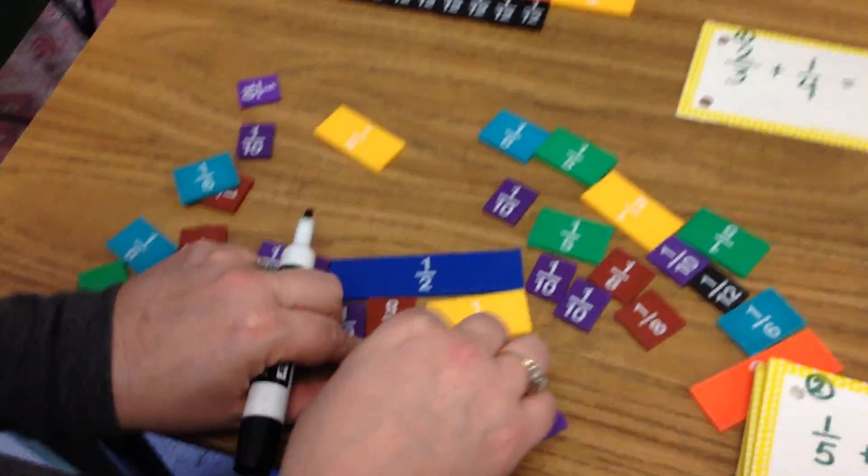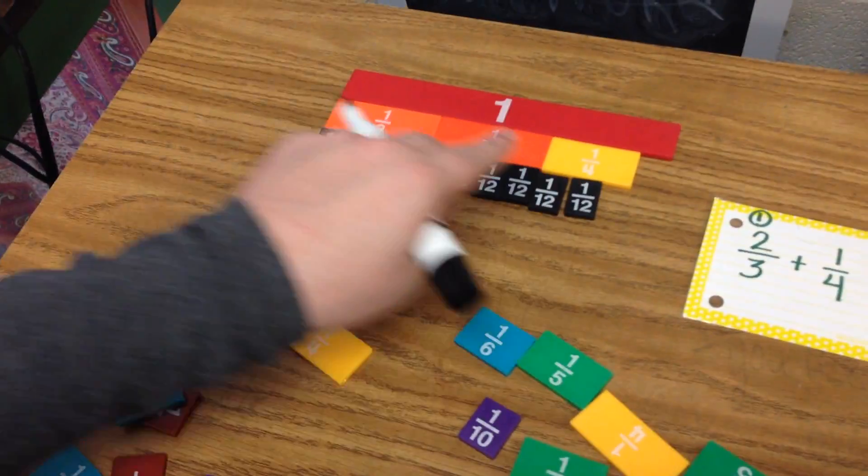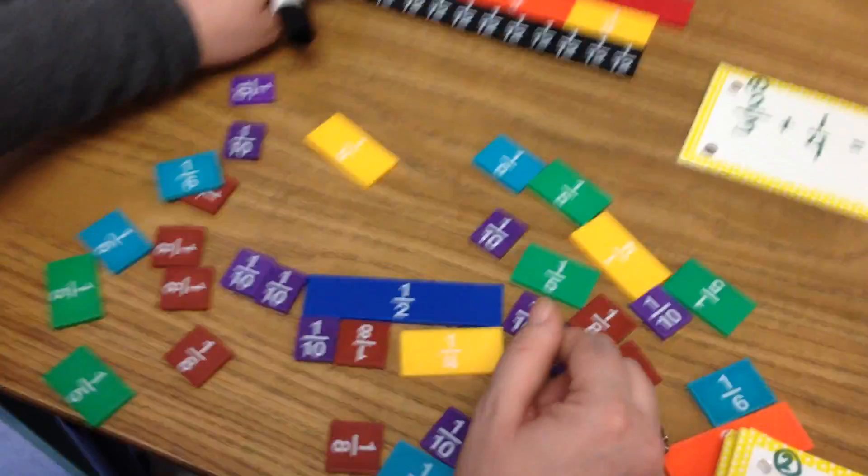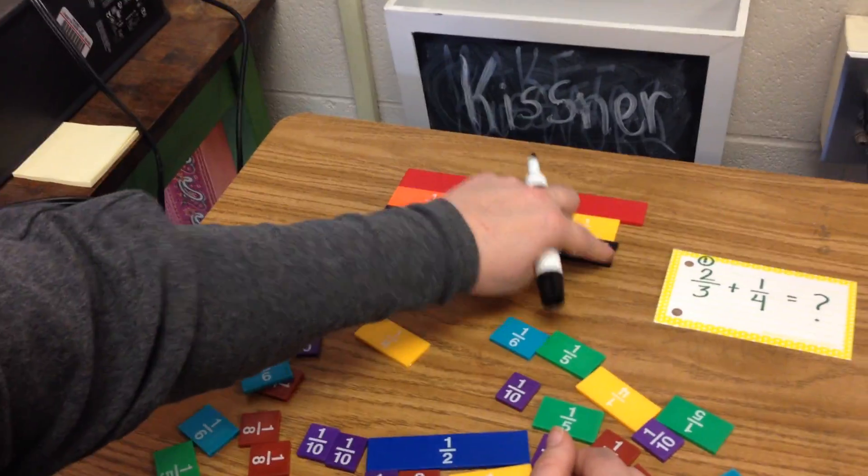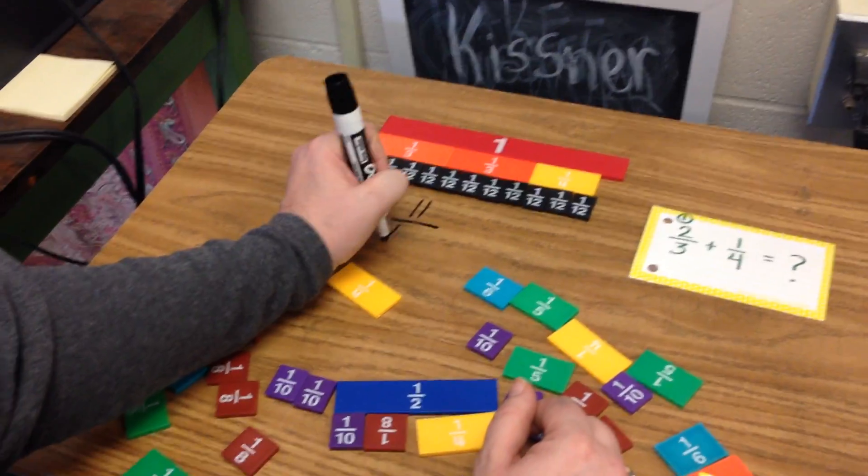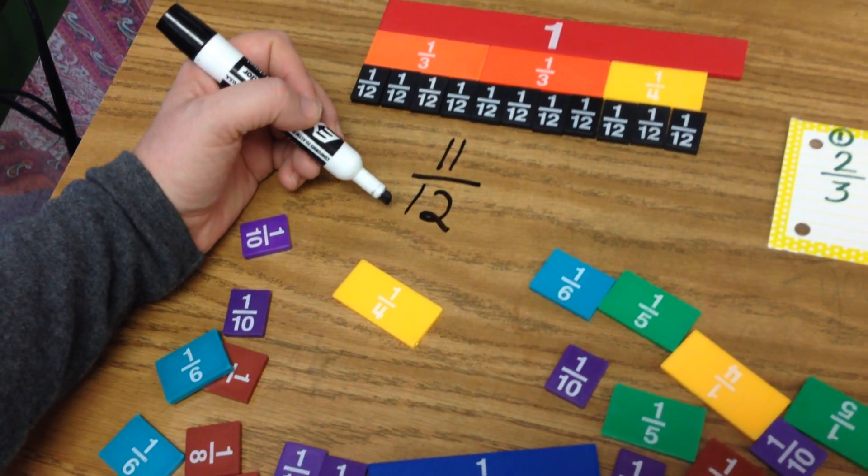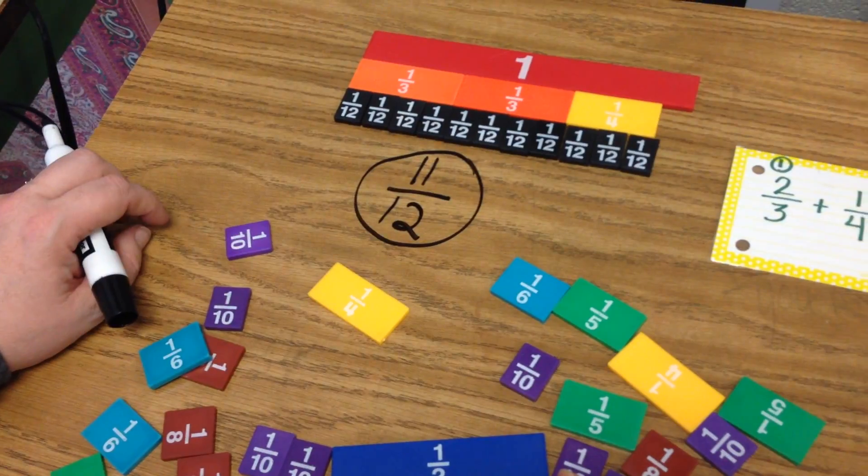And then my one-fourth is going to be three twelfths. So when I add them all together, I get one, two, three, four, five, six, seven, eight, nine, ten, eleven. Eleven twelfths. Because the eleven and twelve are right next door to each other on a number line, that means they are in simplest form. So this would be my final answer.